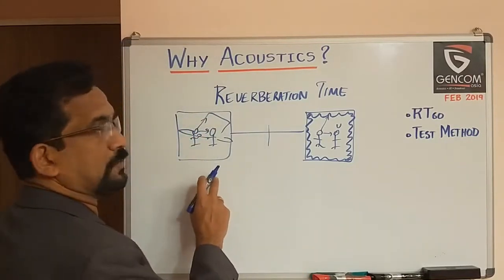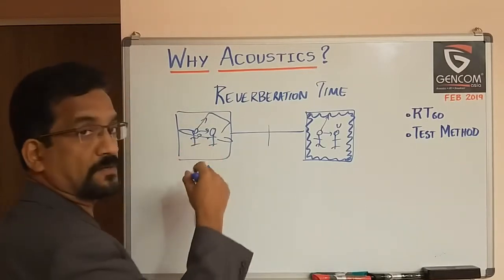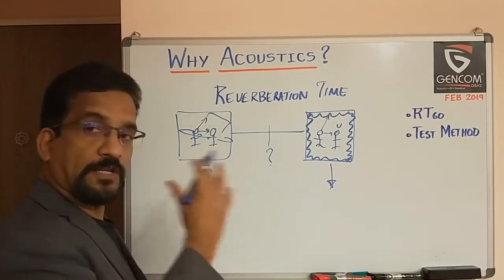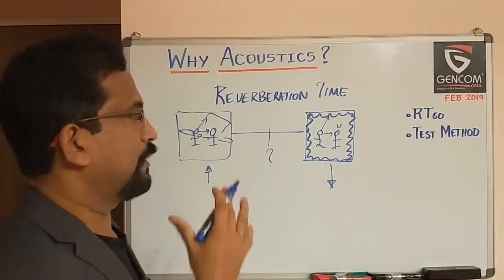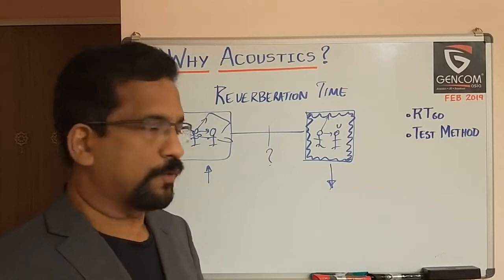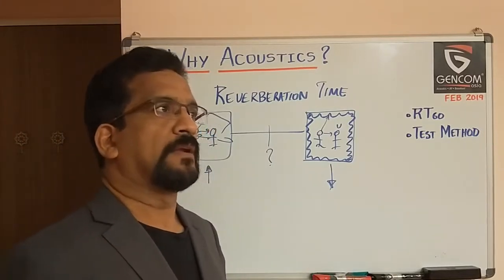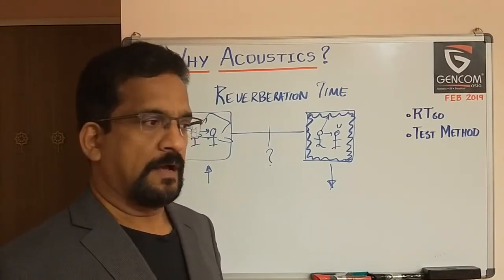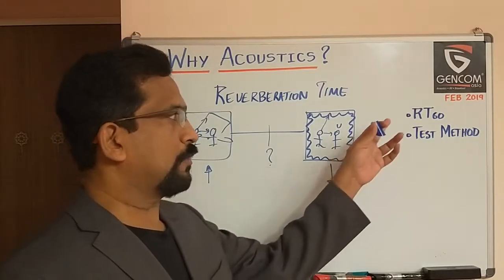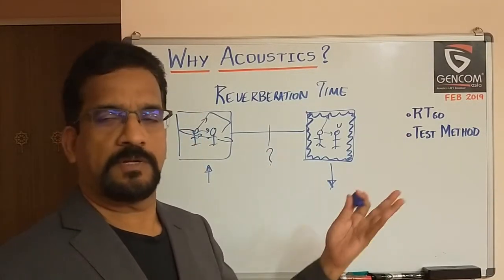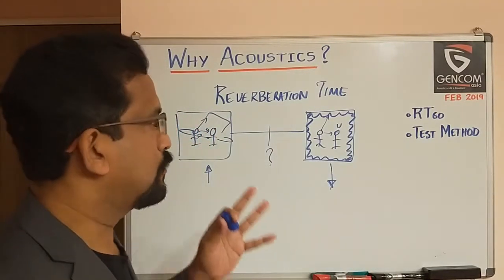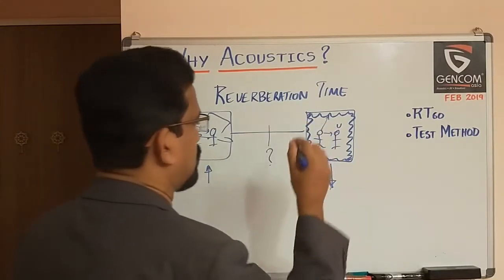In the fully reflective case, reverberation time will be quite high; in the fully absorptive case, it will be minimum. But there is an optimum value for each room, required for each particular application — whether it is a studio, auditorium, and so on. That's why when a room is not done professionally with proper acoustic study, it gives a lot of echo or other problems. RT60 is one of the key measurements required for room acoustics, though there are a few other measurements to consider as well.